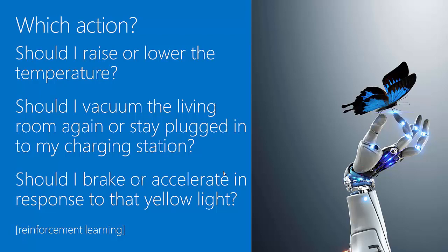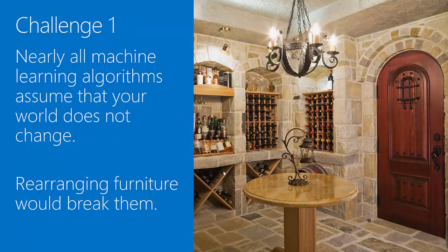So if we want to take a house with sensors and actuators and make it smart — give it a brain — we take a reinforcement learning algorithm, plug it in between the sensors and actuators, and press go. However, there are a number of challenges that actually make this very hard to do out of the box.